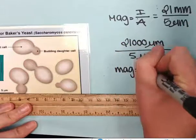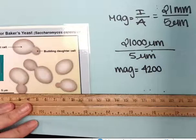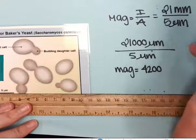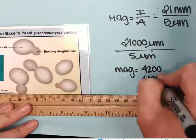My magnification is equal to 4,200. If I want to be really good about my sig figs, I'm going to round that to 4,000x.